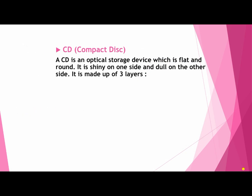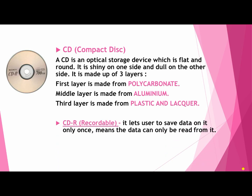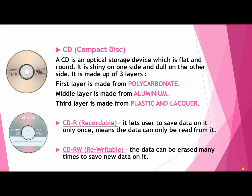Next is your CD, which means compact disk. A CD is an optical storage device which is flat and round — shiny on one side and dull on the other. It is made up of three layers: polycarbonate, aluminium in the middle, and plastic and lacquer on top. CD-R means compact disk recordable and lets the user save data on it only once. CD-RW means compact disk re-writable, meaning data can be erased many times to save new data on it.